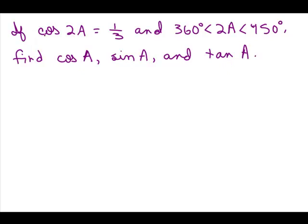So what we're given is the cosine of 2a and we're trying to find the cosine of a. First off, you can't just divide by 2 and say it's 1/6. These are two totally different angles. So what we can do is think: if we know the cosine of 2a, do we have a formula that has the cosine of 2a in it?